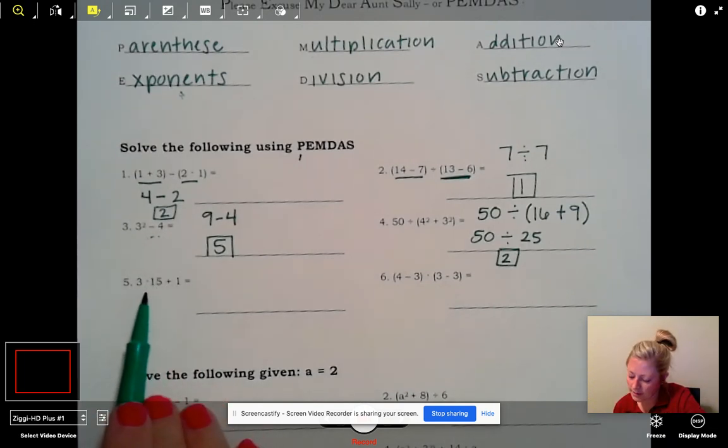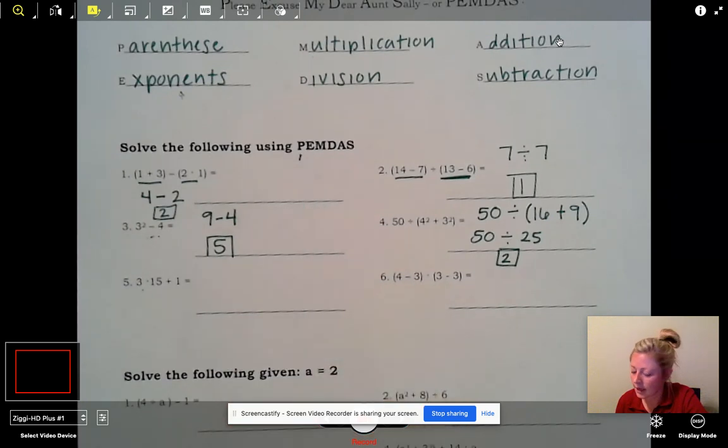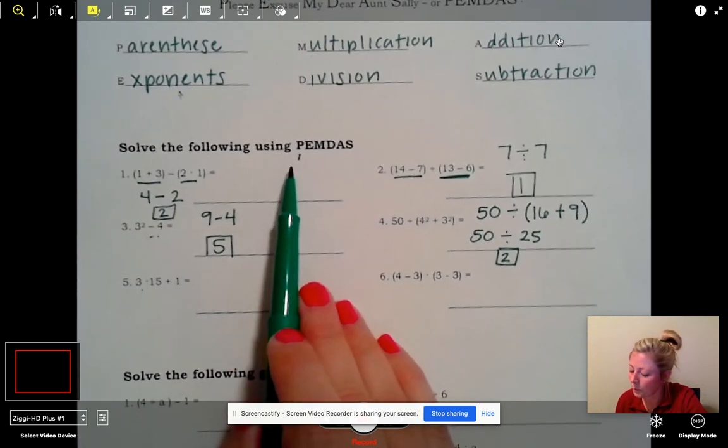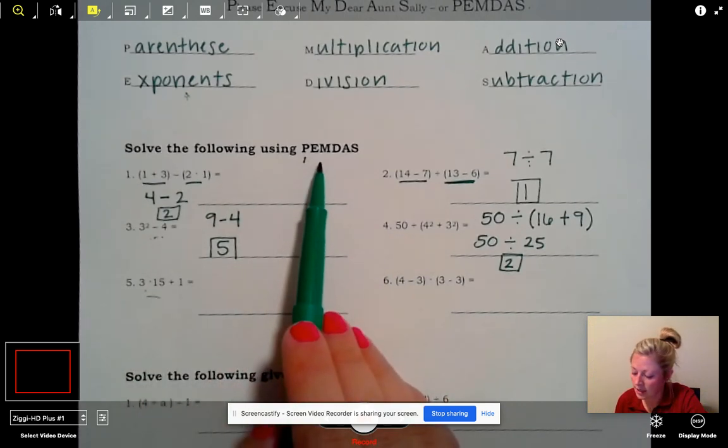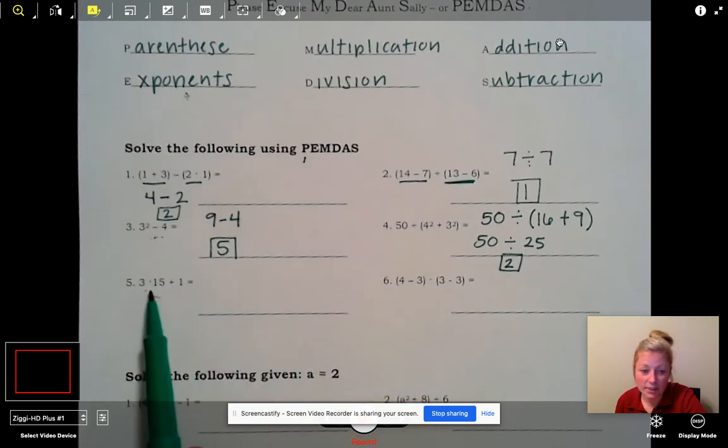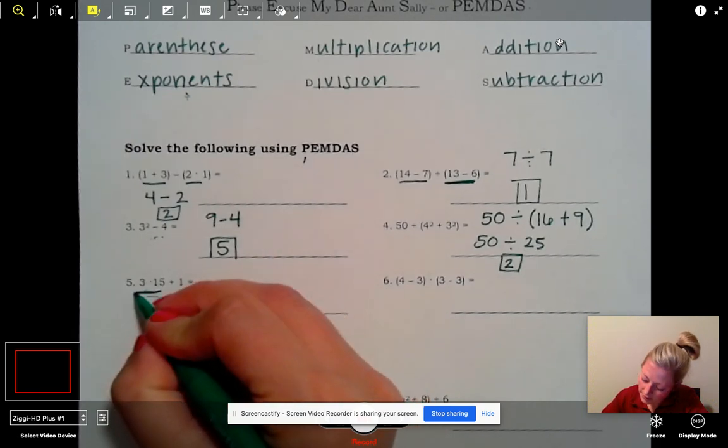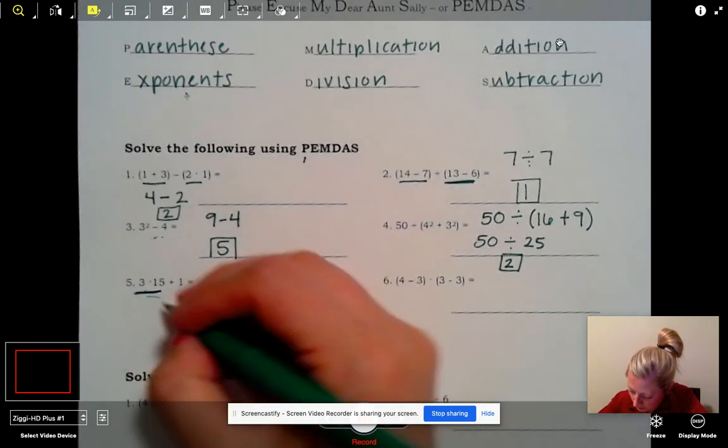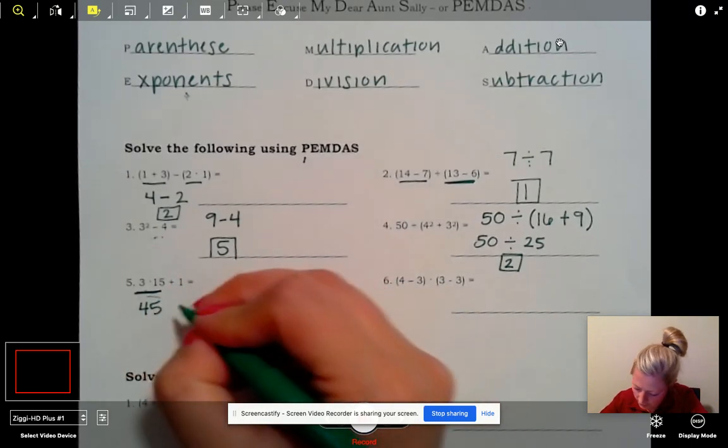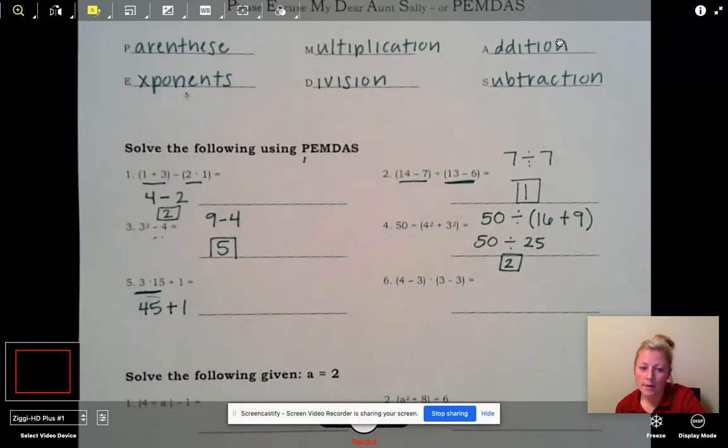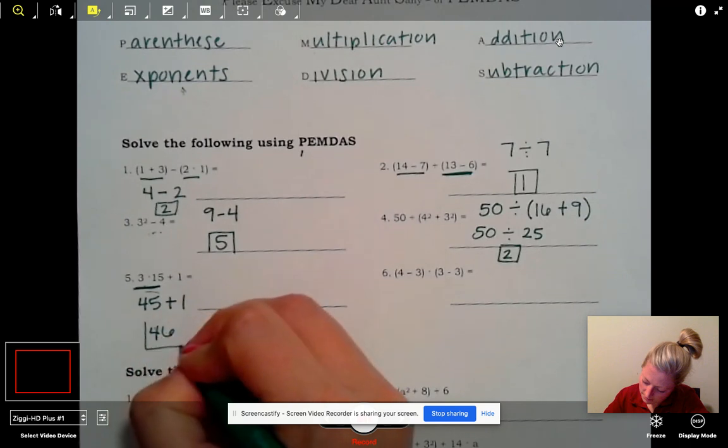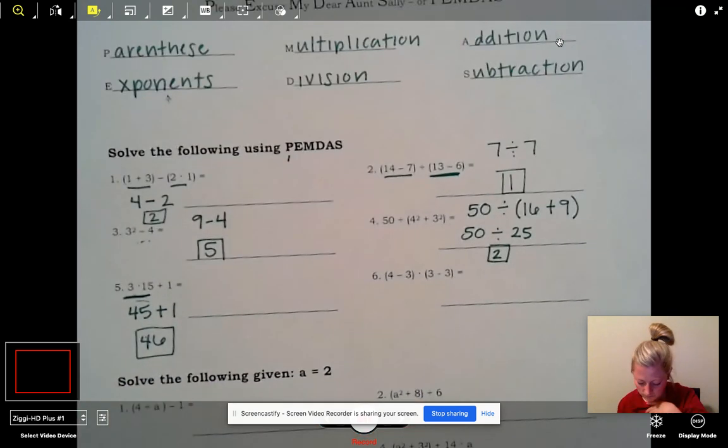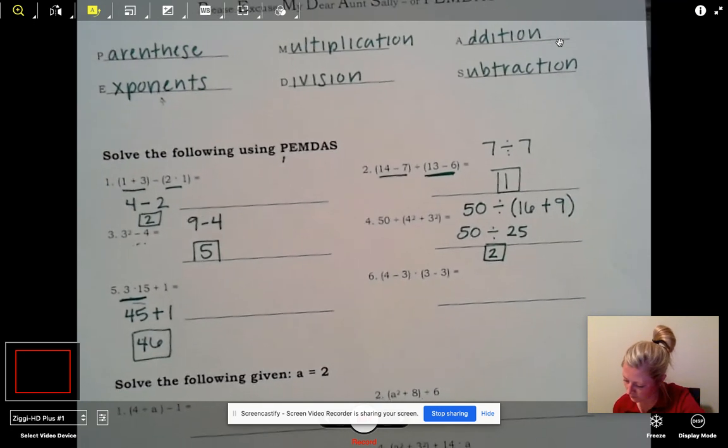Number 5: 3×15+1. Again, we're going to refer back to our acronym. Do I have any parentheses? Nope. Exponents? No, I don't. Now multiplication. Well, we do. Look, right here: 3 times 15. So let's simplify that. What is 3 times 15? Well, we know that is 45. Then drop down your plus 1. And now just finish it: 45 plus 1 is 46. And then we're done.